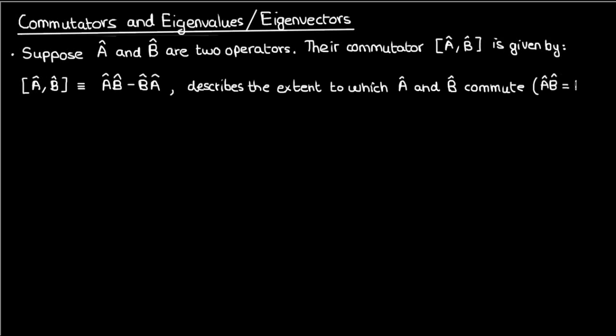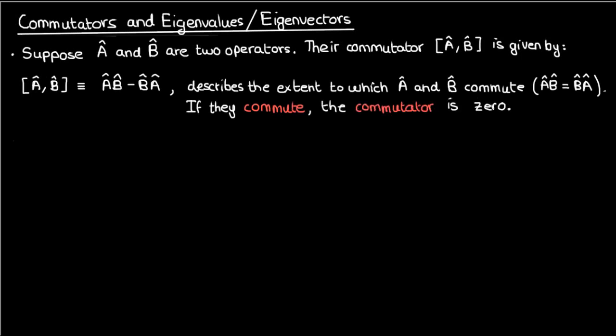If a-hat and b-hat commute — if the order in which they're applied doesn't matter — then a-hat b-hat and b-hat a-hat are equal and so their commutator is just zero. If they don't commute then the commutator isn't zero, and the closer the commutator is to zero, the greater the extent to which a-hat and b-hat commute.